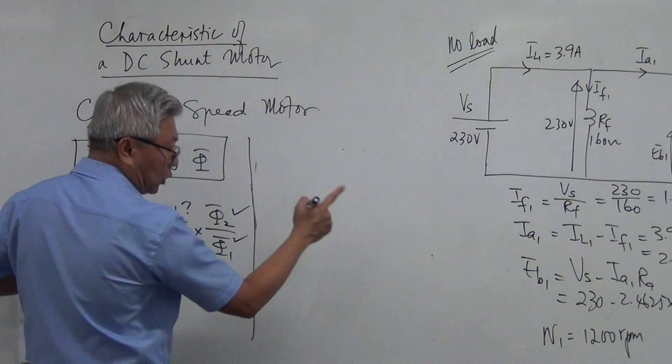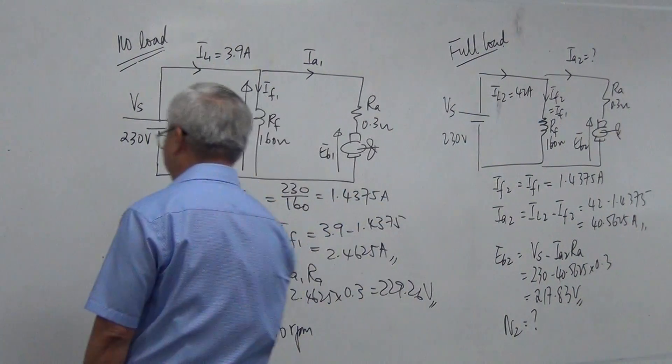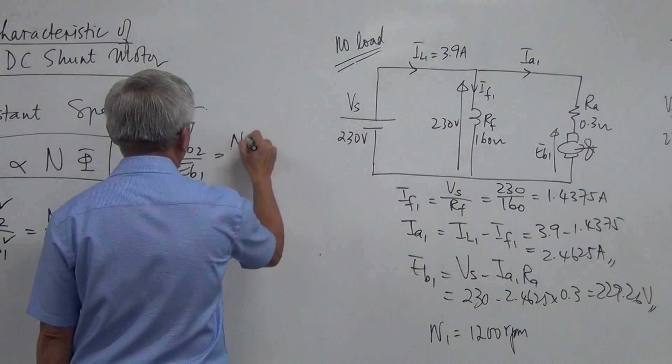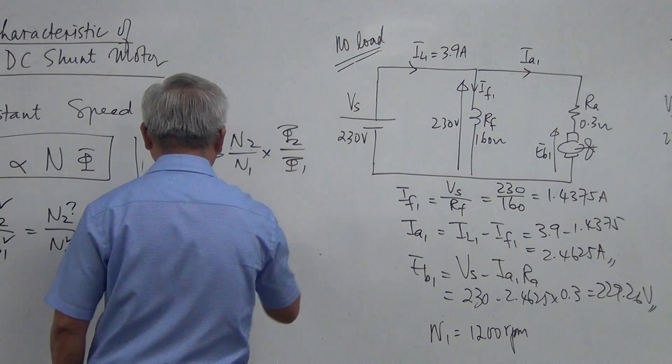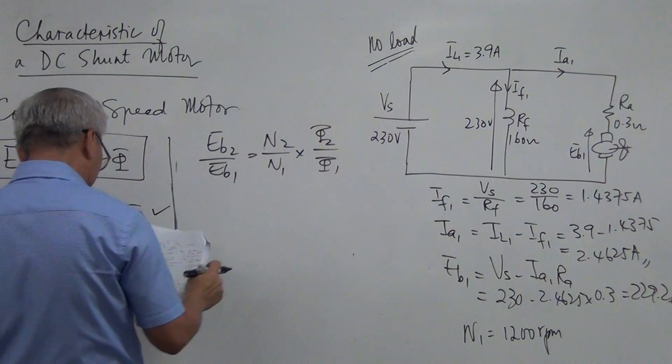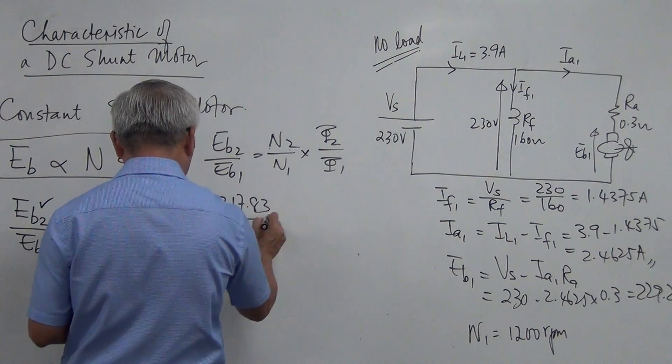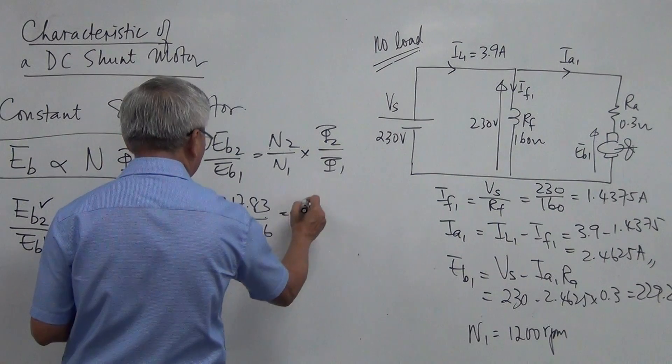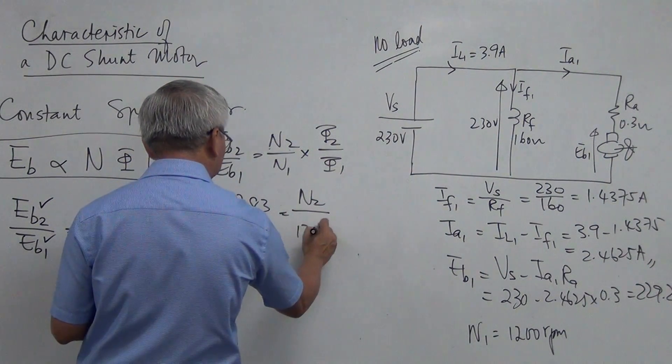So Eb2 from what I have calculated just now is 217.83. So Eb2 over Eb1 equal to N2 over N1 times flux 2 over flux 1. So Eb2 is 217.83. Eb1 is 229.26. N2 is an unknown, a new speed. N1 is 1200 RPM.